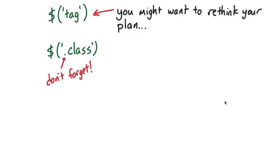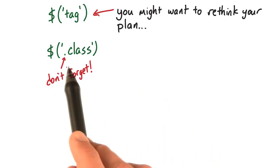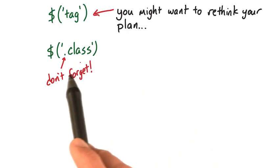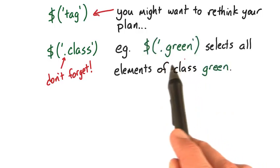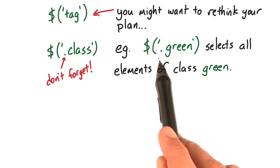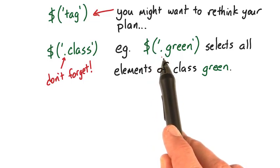To select all elements of a certain class name, simply pass the class name with a dot in front as a string to the jQuery object. For instance, if you want to select all elements of class green, you could call the jQuery object and pass it a string of a dot followed by green.